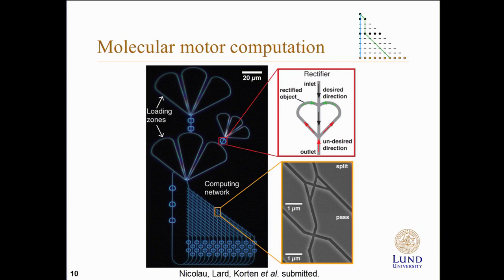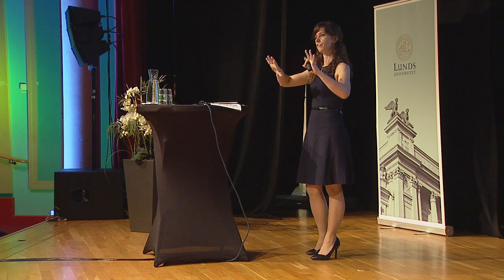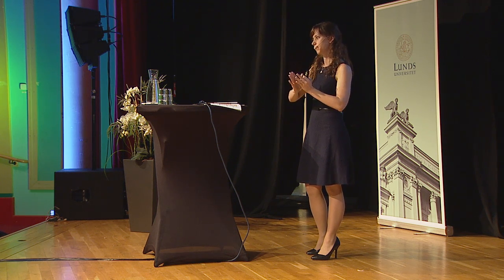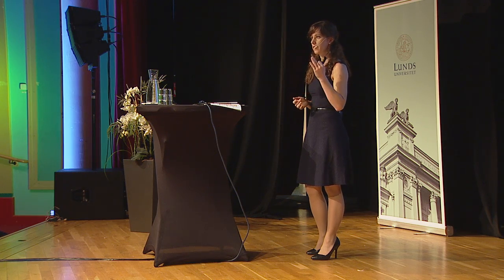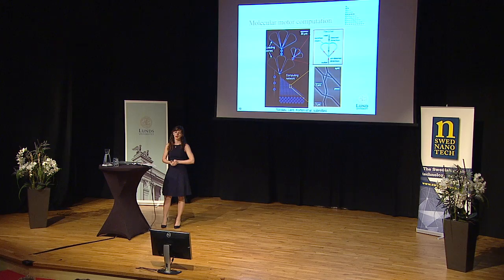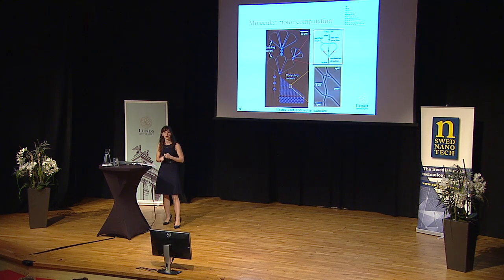So what we want to do is use these molecular motors to reduce the time complexity. With such a device, we have entry points called loading zones coming from the top portion of the network. The filaments land on open areas and are fed into the network on a very fast timescale. As they traverse through the network, they follow junctions we call split and pass junctions, where one junction can let the filaments turn left or right, and another junction lets them continue along a straight path. By organizing these junctions in a specific way, we can get these motors to solve problems. At the end of the network, there are feedback loops which recycle the filaments, and rectifiers which control the direction of motion after they've escaped the network.